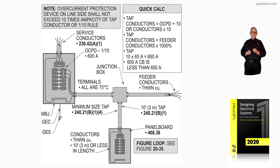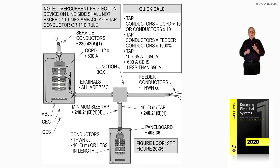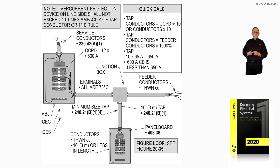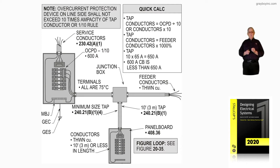And 240.92E for the tap rules. If you were tapping from a feeder going into an auxiliary gutter, and you're tapping out of that gutter to switches supplying controllers and a motor, then you'd go to 430.28. So when applying a tap rule, look at 230.82, 240.21B, 240.21C, 240.92C and E, and then 430.28 if it's motor loads.